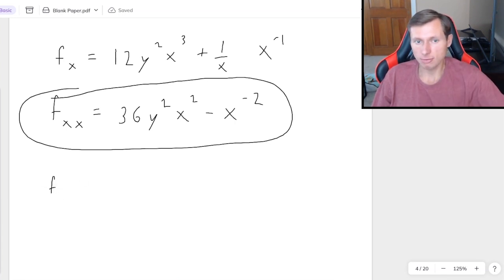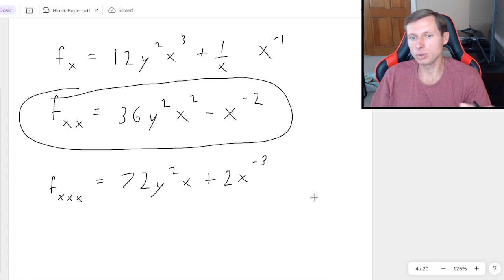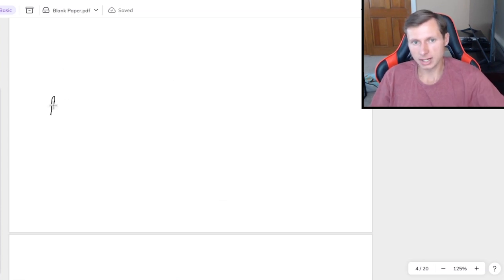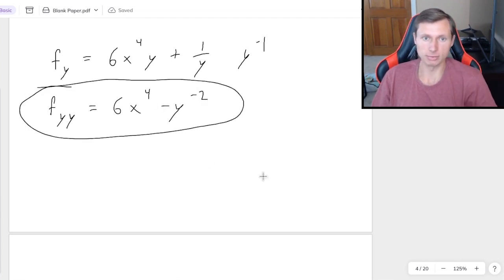If you want, you could even find a third derivative of x. And if you were to do that, I'll just tell you, you'd get 72y squared x plus 2x to the minus third power. So that's how we do these x derivatives. And now let's find fyy, remembering that fy was this. So then the second derivative with respect to y is going to be coefficient rule for the first part, 6x to the fourth. And then that's, again, y to the minus 1. So minus y to the negative second. And there's our second derivative with y.